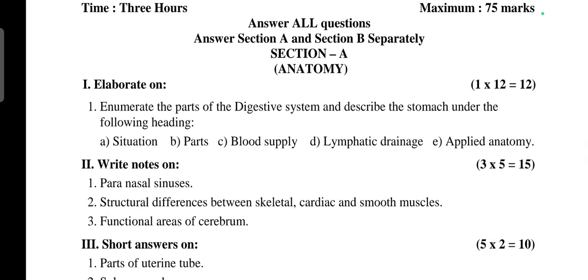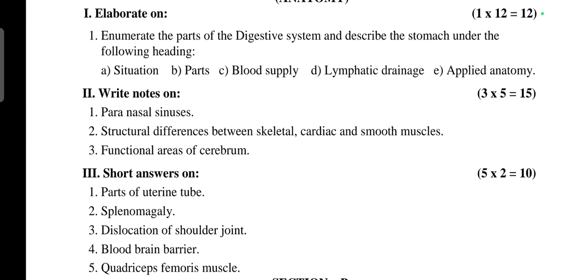First, elaborate on: Enumerate the parts of the digestive system and describe the stomach under the following headings: situation, parts, blood supply, lymphatic drainage, applied anatomy. This is 12 marks. Next is paranasal sinuses.